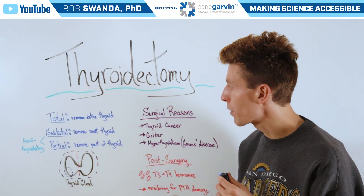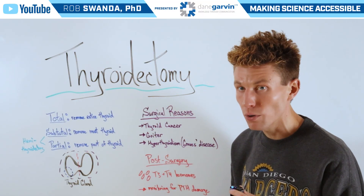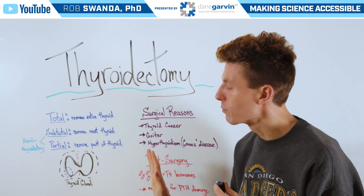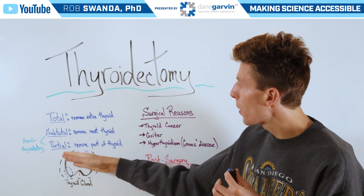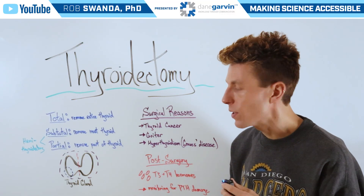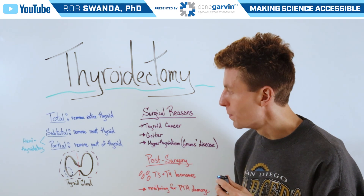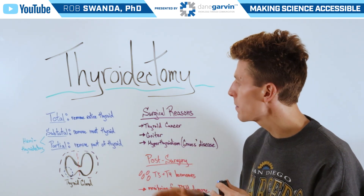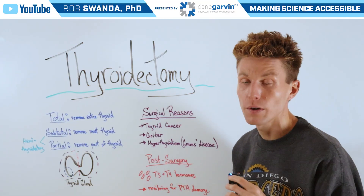There can be a subtotal thyroidectomy, which is removal of most of the thyroid — you can think of it with this dotted line here in red, removing one of the halves. Or there can be a partial thyroidectomy, which is removing just part of the thyroid, depicted here as the dotted line in blue. Additionally, subtotal and partial thyroidectomies are sometimes referred to as hemi-thyroidectomies.